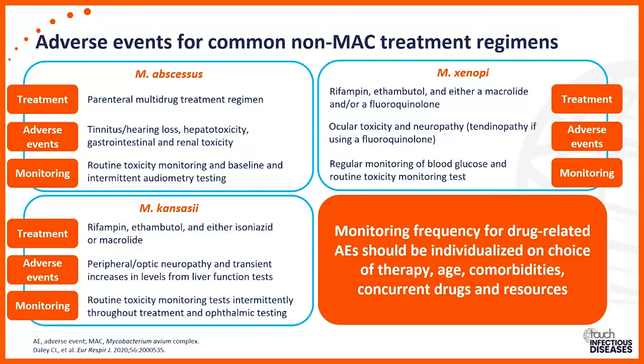When thinking of non-MAC lung disease, primarily in the U.S. and worldwide, the second most common is Mycobacterium abscessus — the most difficult to treat, requiring parenteral multidrug regimens and very close monitoring. We usually use an aminoglycoside, usually amikacin, and then either imipenem, tigecycline, or omadacycline. With aminoglycosides, you're concerned about hearing and renal side effects, so monthly audiograms are very important.